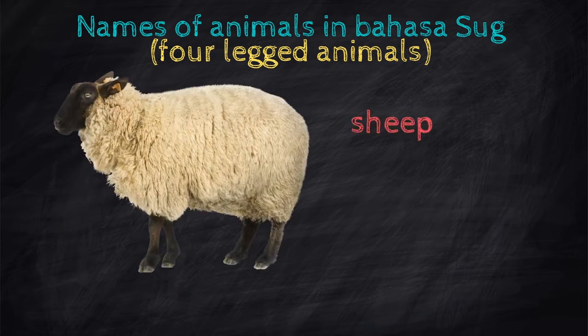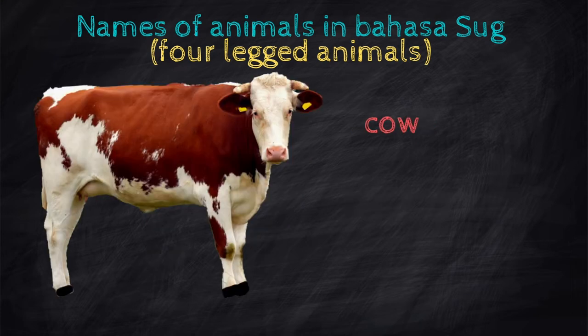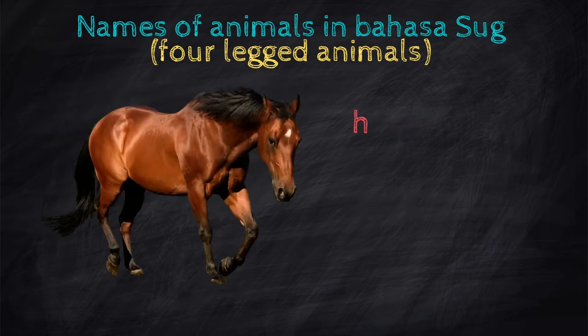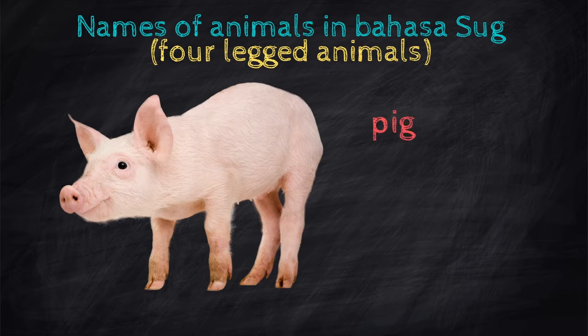Sheep — Bilibili. Cow — Sapi. Horse — Kura. Pig — Babui.